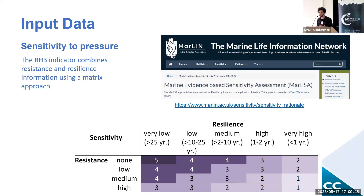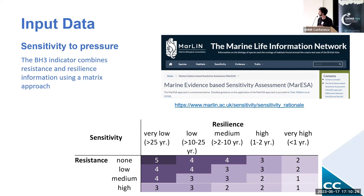Once we have information on benthic species and habitat distribution, this needs to be linked to their sensitivity to specific pressures. The sensitivity is mostly obtained from the MARISA assessment, which is a robust and peer-reviewed methodology that provides sensitivity information for a range of pressures, and which is developed from the MarLIN framework by the Marine Biological Association. The sensitivity is considered as a combination of the resistance and the resilience of the receptor. The resistance is the ability of the receptor to withstand an impact event, and the resilience is the time that the receptor requires to recover from an impact event.